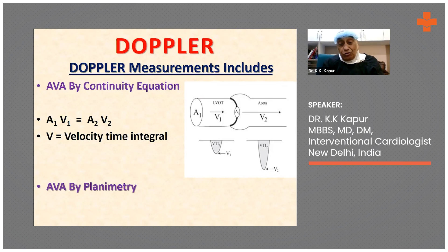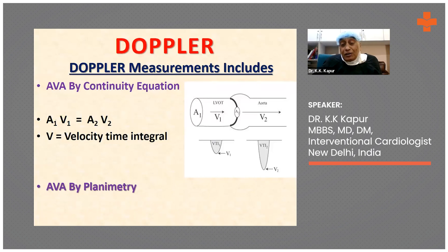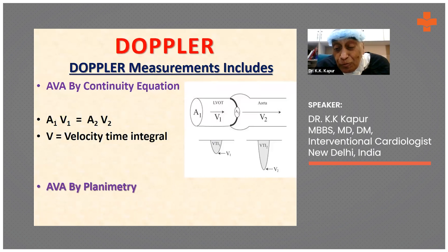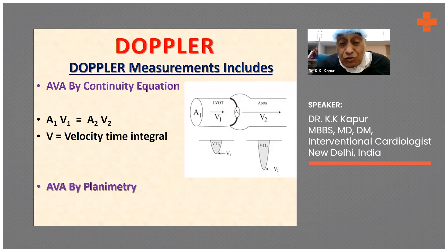V1 is equal to A2·V2 because the flow going from the LV outflow tract through the aortic valve into the aorta is the same. A1·V1 is the flow in the LVOT, and A2·V2 is the flow across the aortic valve. So the flow across the LVOT equals the flow across the aortic valve — this is called the continuity equation. We measure the aortic valve area using this continuity equation.